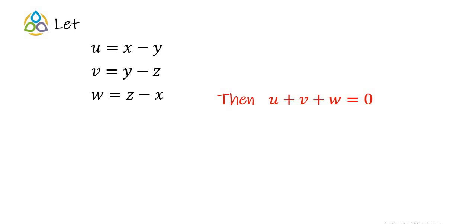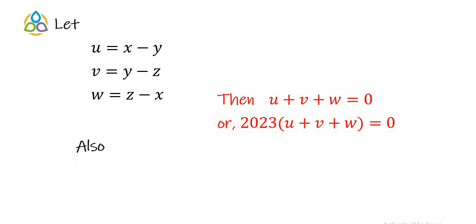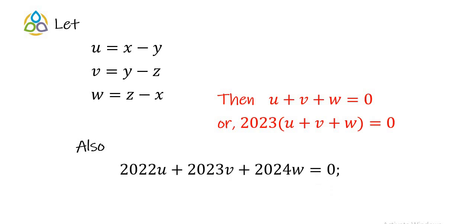If we multiply both sides by 2023, the value remains the same: 2023(u + v + w) = 0. So the first transformed equation becomes 2022u + 2023v + 2024w = 0.